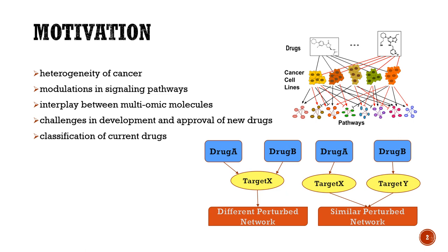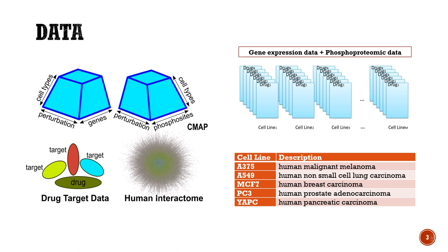Traditional methods prioritize chemical and functional similarities while grouping drugs. However, chemically and functionally similar drugs may lead to different protein-protein interaction networks within the specific cells, or vice versa.